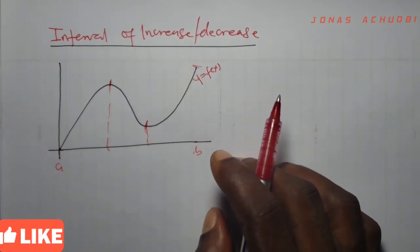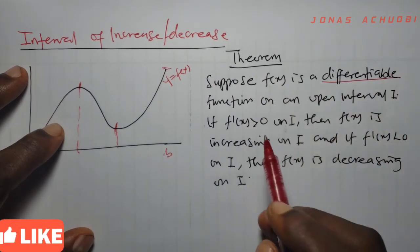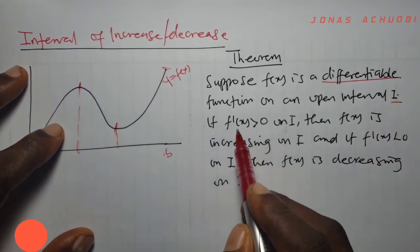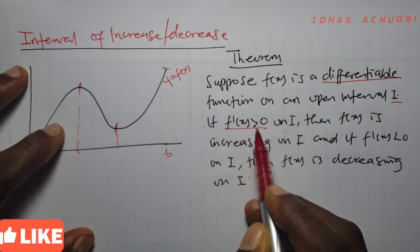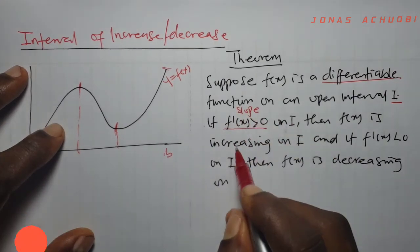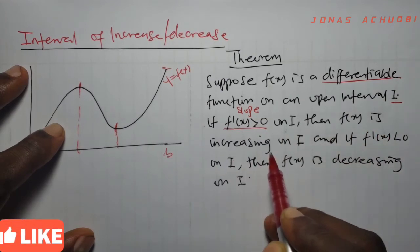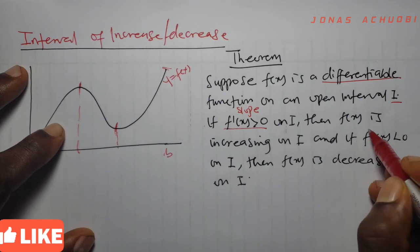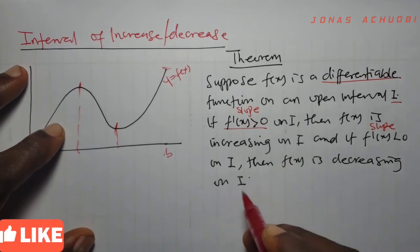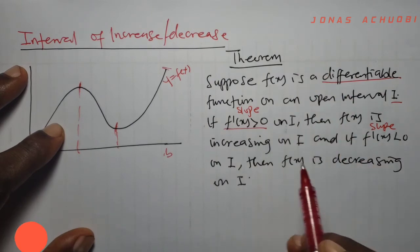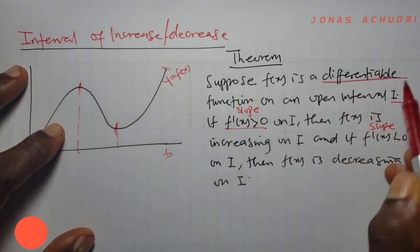We shall state the following theorem without proof. The theorem states that suppose a function f of x is differentiable on an open interval i. If f prime is greater than 0 — meaning the first derivative of the function is positive, which also means the slope is positive on the interval i — then the function is said to be increasing on i. And if the slope of the function is negative on that interval, then f of x is said to be decreasing on i.